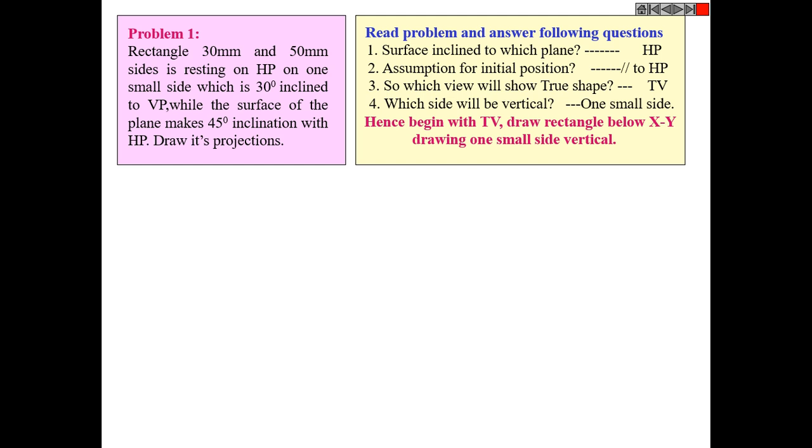Here, observations need to be made and questions have to be answered. Read the problem and answer the following questions: Look at which surface is inclined to which plane? HP. Second, assumption for the initial position should be made parallel to HP so that the view will show true shape. Which view? That is top view. Which side will be vertical? One small side.